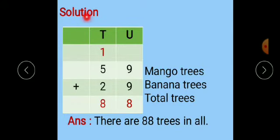For this question, the solution is: first number is 59, what is 59? Mango trees. Plus 29, 29 is banana trees. Now we have to add these two numbers. So 9 plus 9 is 18, write 8 here, 1 is carrying over to the tens place. After that, 2 plus 5 is 7, 7 plus 1 is 8. The answer is 88, 88 is the total number of trees. The final answer is there are 88 trees in all.